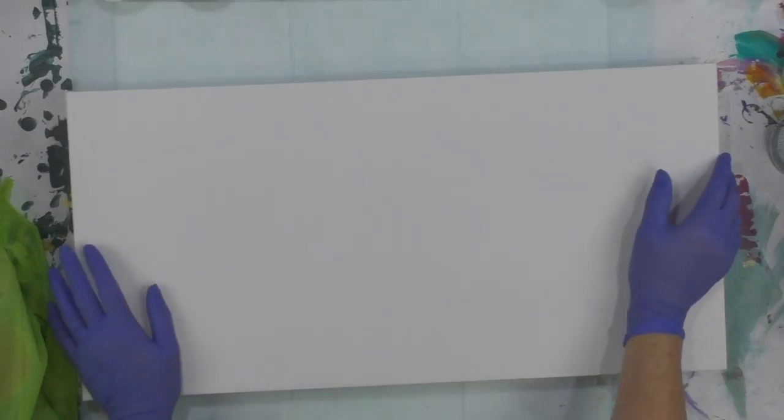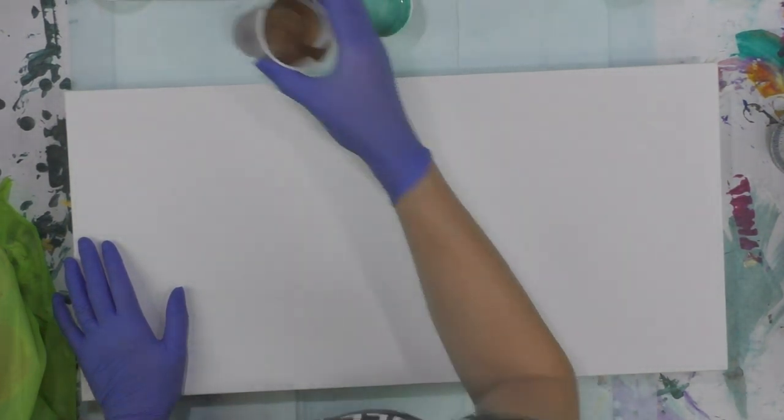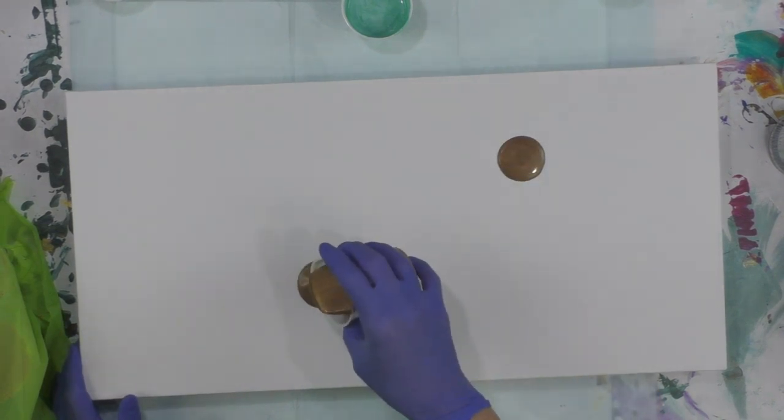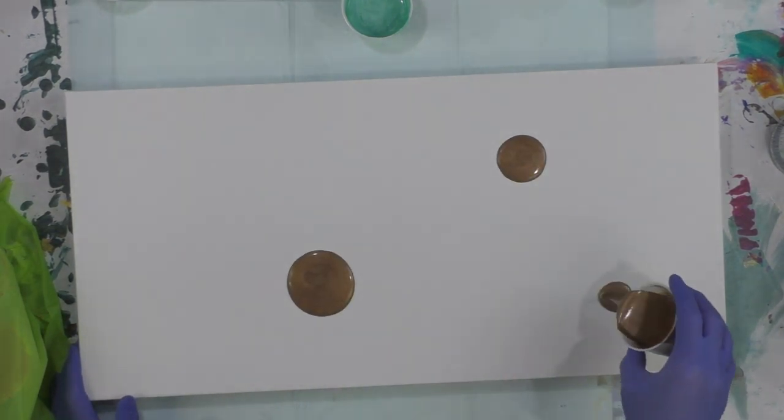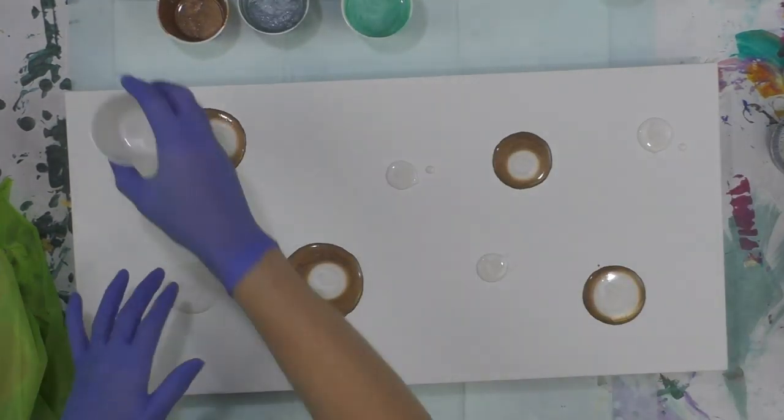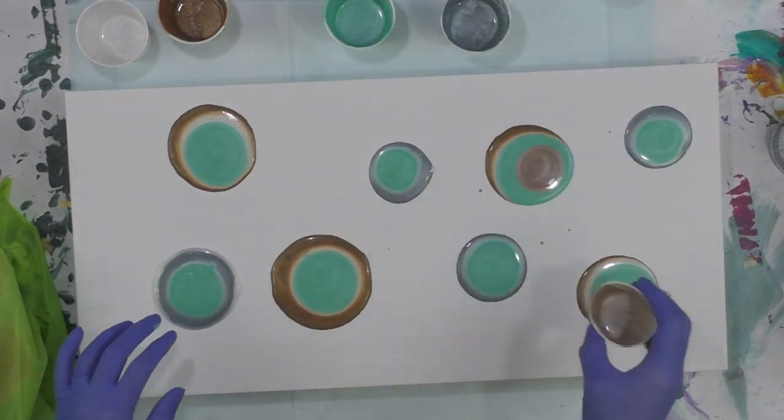So here's my 12 by 24 canvas again. It's gallery wrapped and I'm going to just do puddle pours. I'm going to speed through this so that you don't have to watch me do all these puddles so slowly.